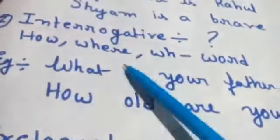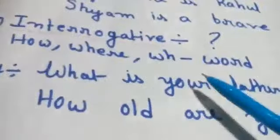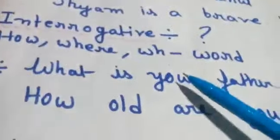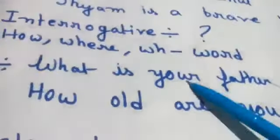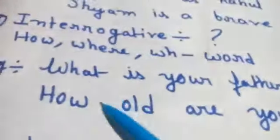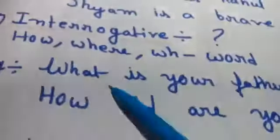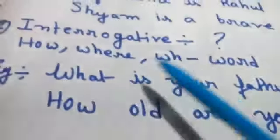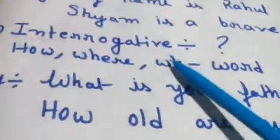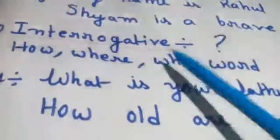WH words — such as where, how, whom, whose — are used in interrogative sentences. The helping verb will come before the subject. That is what interrogative sentence is about.